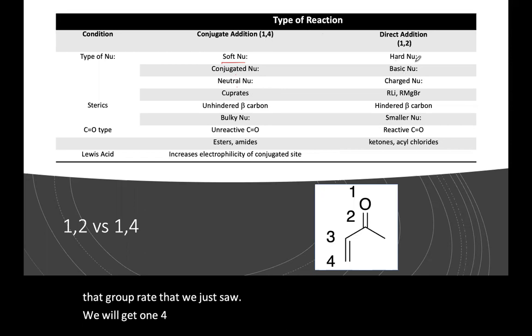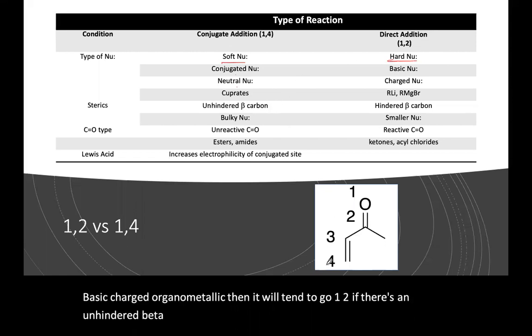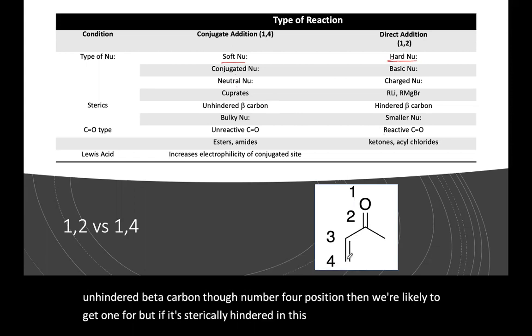If we have a hard nucleophile, basic, charged, organometallic, then it will tend to go 1,2. If there's an unhindered beta carbon, the number four position, then we're likely to get 1,4. But if it's sterically hindered in this position, it will be more likely to go 1,2.